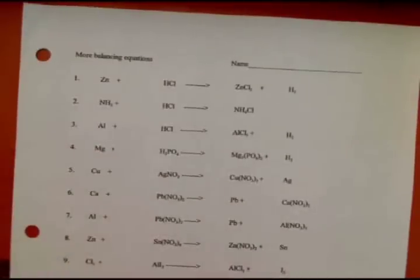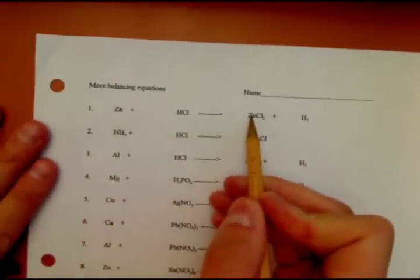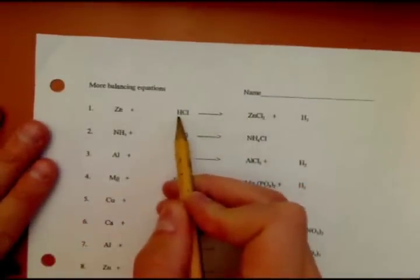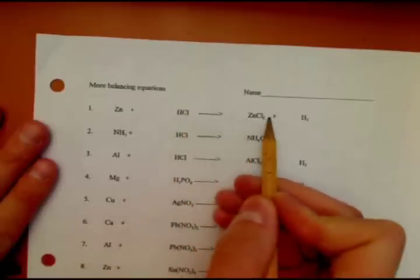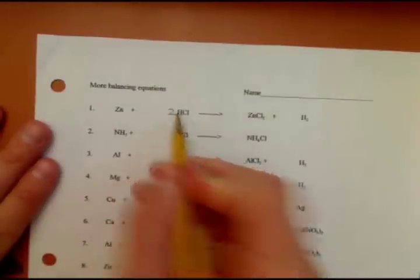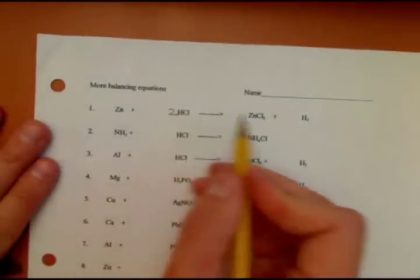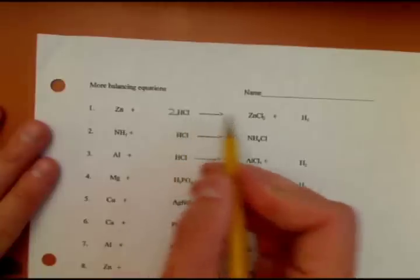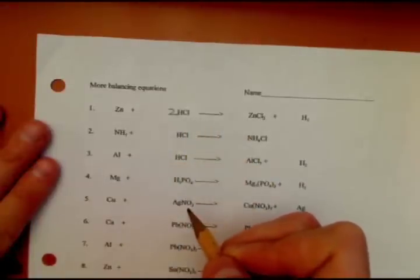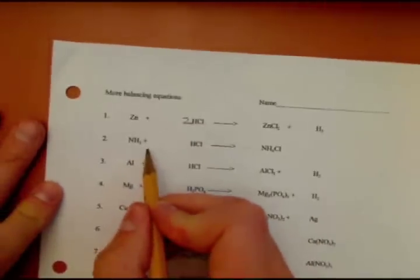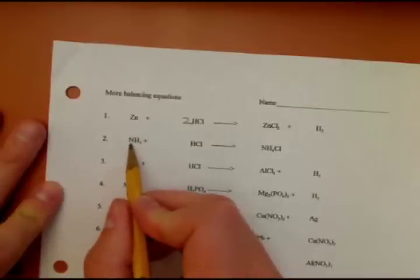Alright, so like I said, the best way to do this is guess and check. So one zinc on the left, one zinc on the right. One hydrogen and one chlorine, right? Oh, two hydrogens and two chlorine. So if you put a 2 right there: two hydrogen, two hydrogen, two chlorine, two chlorine, you're good to go.